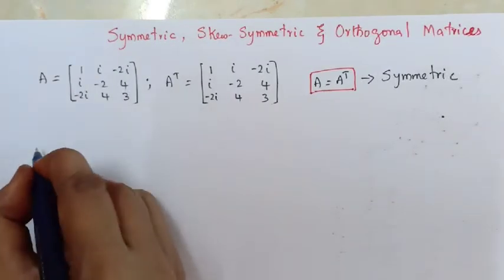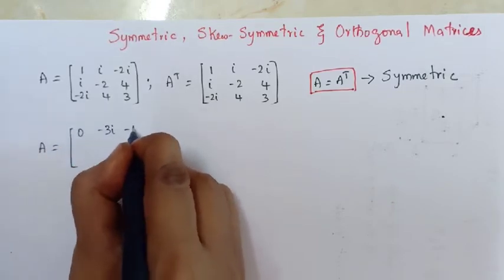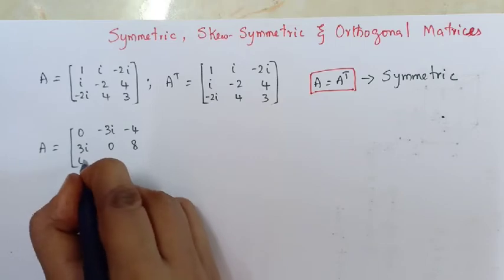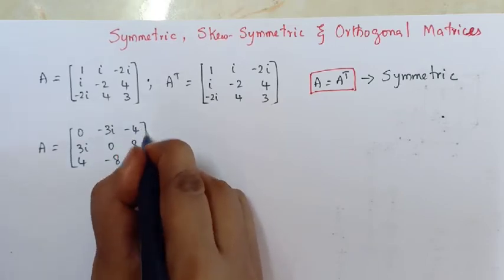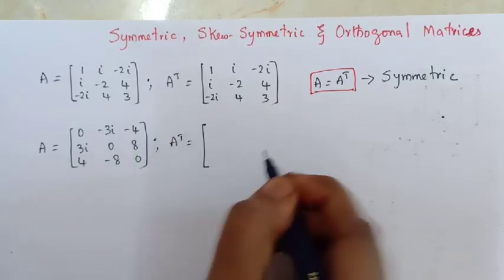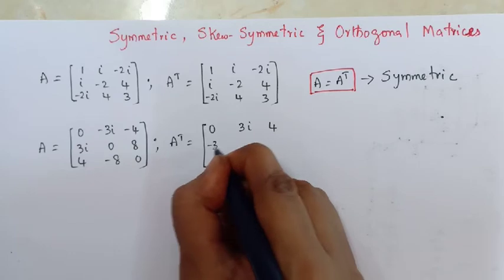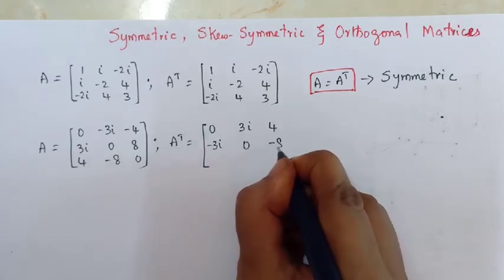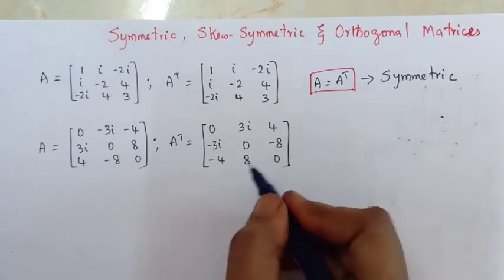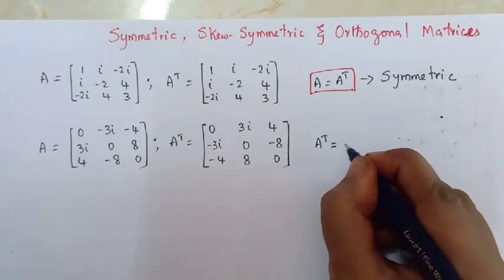Next, consider another matrix: A is equal to 0, -3i, -4, 3i, 0, 8, 4, -8, 0. Here we observe that the A transpose matrix is equal to 0, 3i, 4, -3i, 0, -8, -4, 8, 0, which equals negative A.